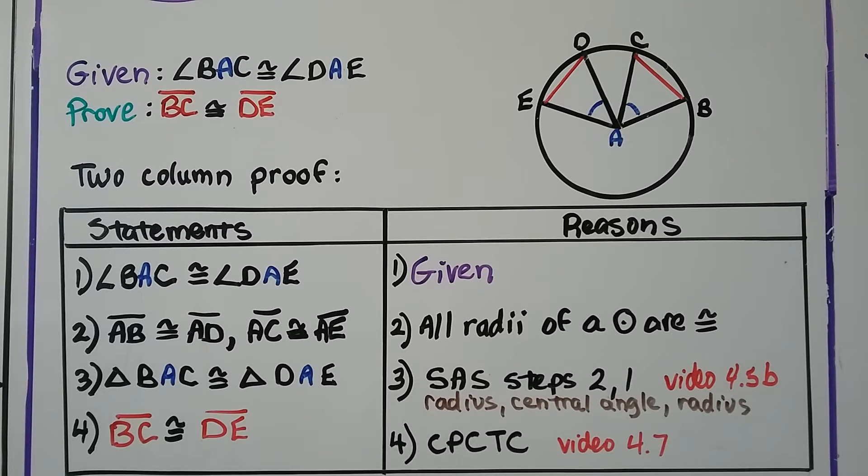We learned about side angle side back in video 4.5b. There'll be a link in this description if you need it. But our side radius angle, the central angle, and our other side, the other radius, is our SAS. That brings us to number four, that segment BC, up here, is congruent to segment DE, here, because of CPCTC. Corresponding parts of congruent triangles are congruent. We learned about that in 4.7. There's going to be a link to that, too. Alright, so there's our two-column proof, and we proved that the two chords are congruent.